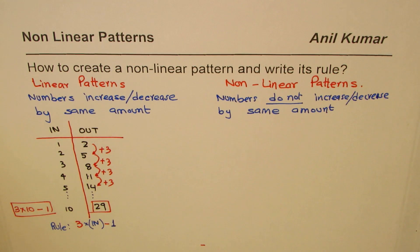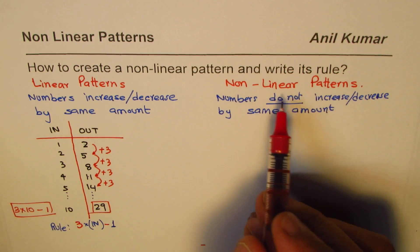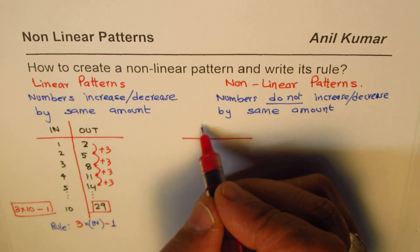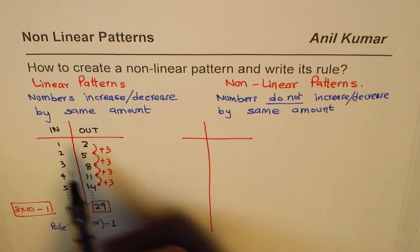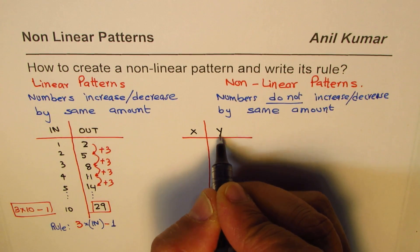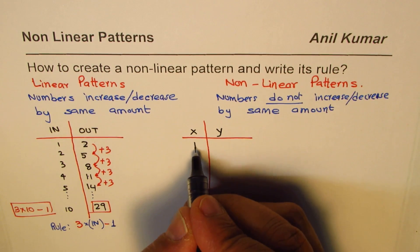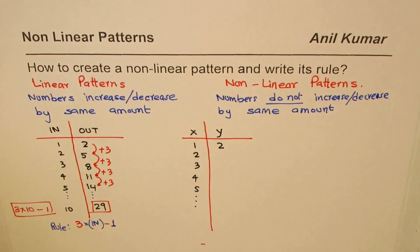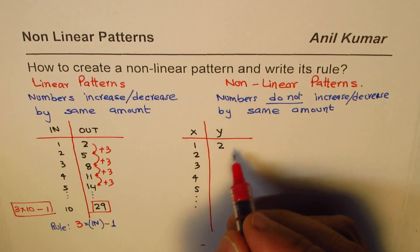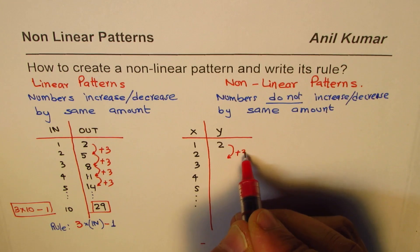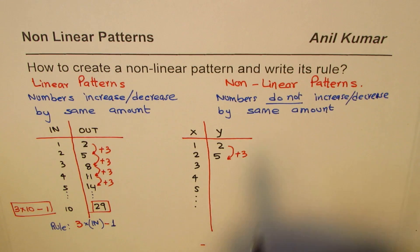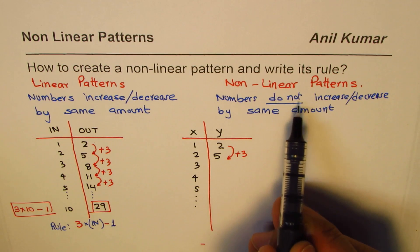Now let's get into nonlinear patterns — they are just as simple. We'll again use x as input and y as output, with input values one, two, three, four, five. We start with two again. We add three first, getting five, same as before.